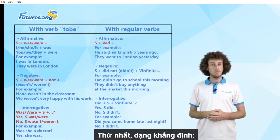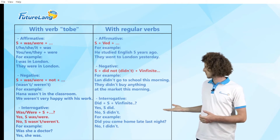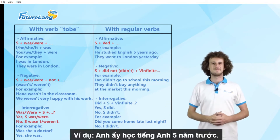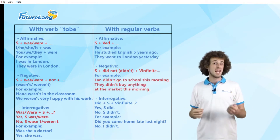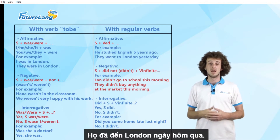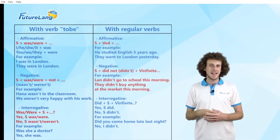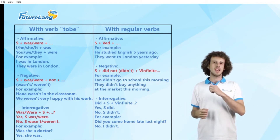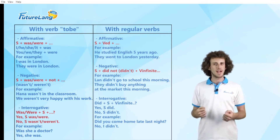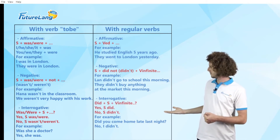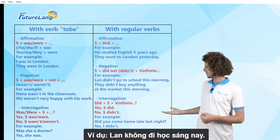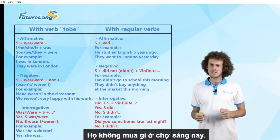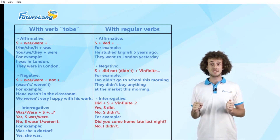And for the negative form, for example: 'Lan didn't go to school this morning.' Or, 'They didn't buy anything at the market this morning.' And for the interrogative form — for example: 'Did you come home late last night?' No, I didn't.